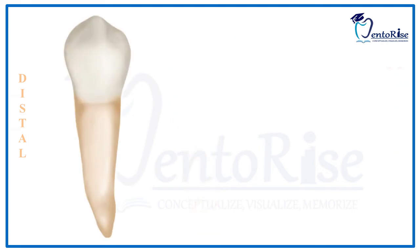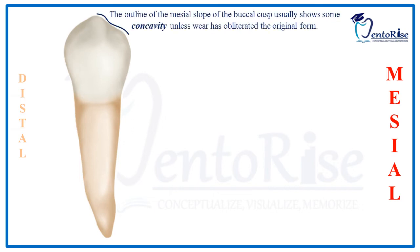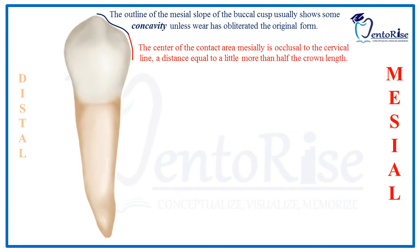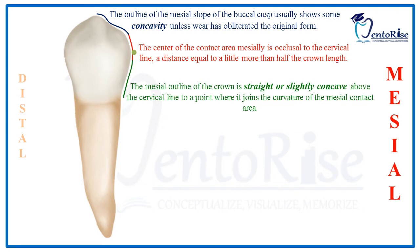Observing the mesial outline of the crown from the buccal aspect, starting from the tip of the cusp and moving down cervically, the mesial slope of the buccal cusp is slightly concave. Moving down cervically, the contact area is broad and located just occlusal to the center of the crown measured from cusp tip to cervical line. Further cervically, the mesial outline is straight or slightly concave above the cervical line.